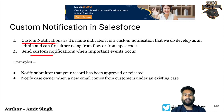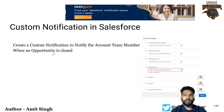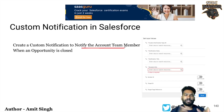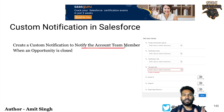There will be multiple examples where you might use custom notifications. In this video, what we are going to do is create a custom notification and notify the account team members for a particular opportunity. When that opportunity is closed — meaning its stage changes to Closed Won — we are going to notify all account team members that this particular opportunity has been closed.